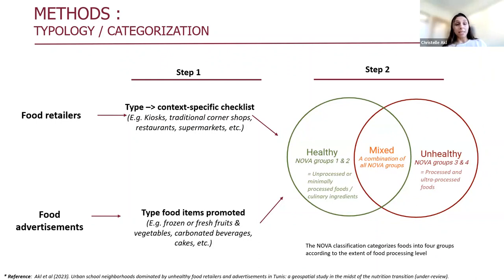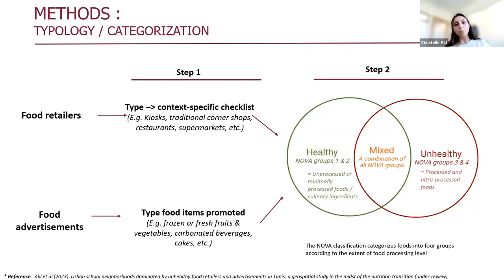Retailers were first categorized by type according to context-specific checklists — one for Tunisia and one for Lebanon — developed by the research team. For example, retailers were classified as kiosks, traditional corner shops, or restaurants. These retailers were then further classified into three groups based on NOVA categorization, based on the prevalent food sold within the retailer. If a retailer was mainly selling processed and ultra-processed food, it was categorized as unhealthy. A retailer selling a wide range of products spanning all NOVA categories would be categorized as mixed — for example, supermarkets.